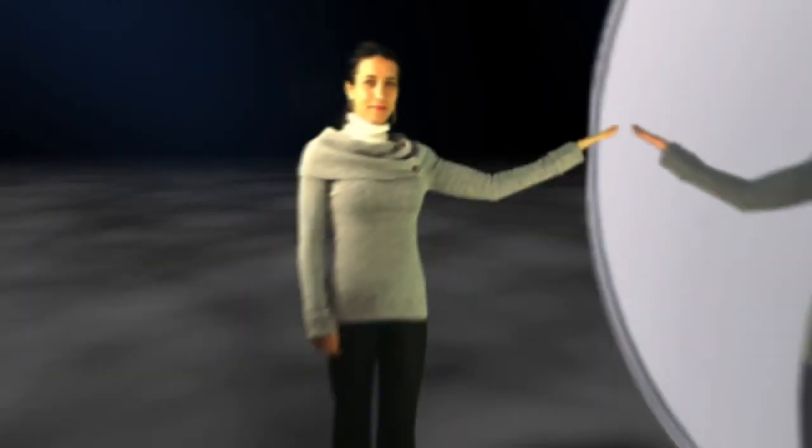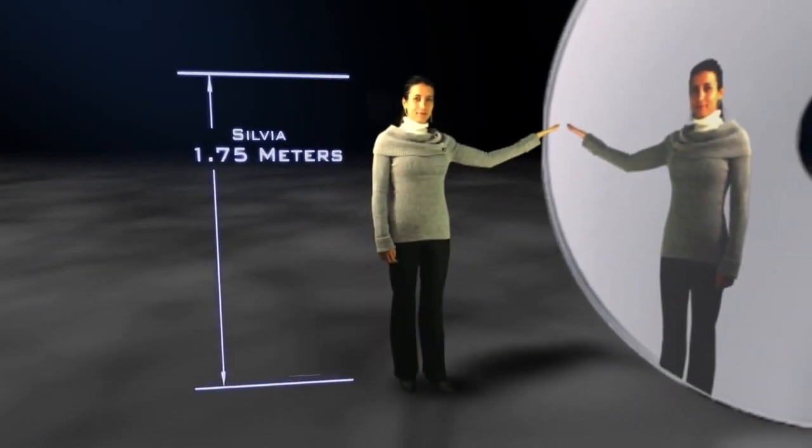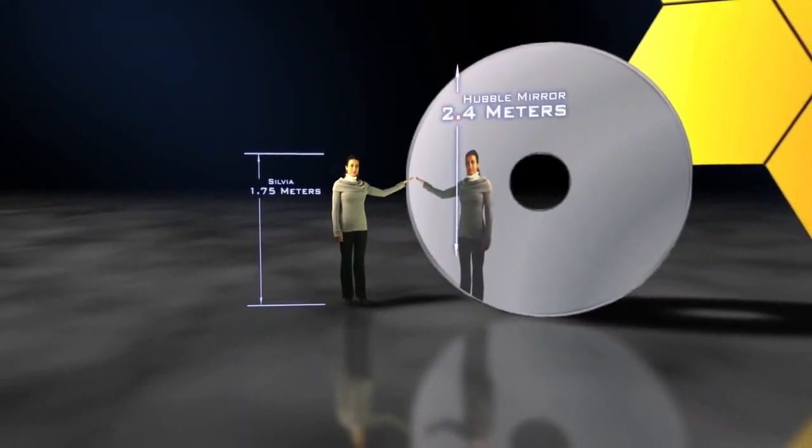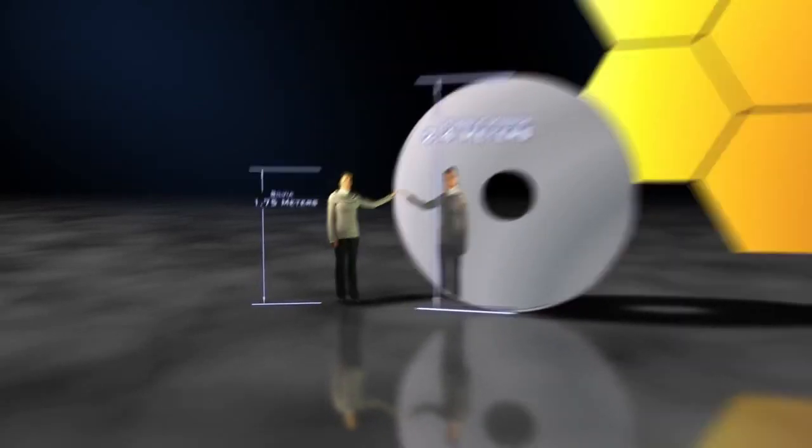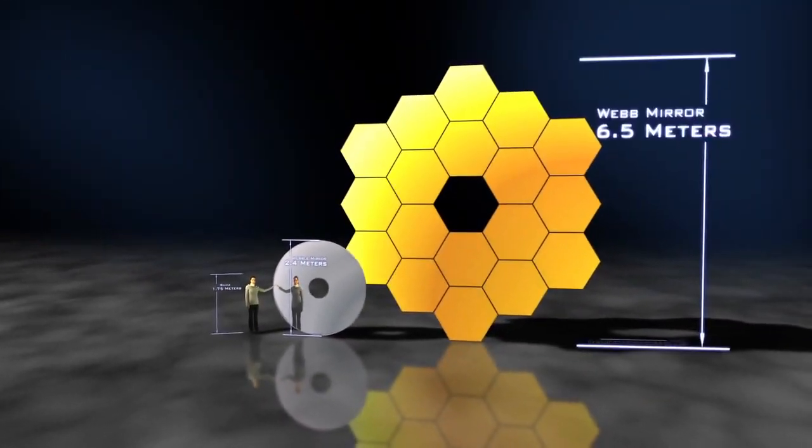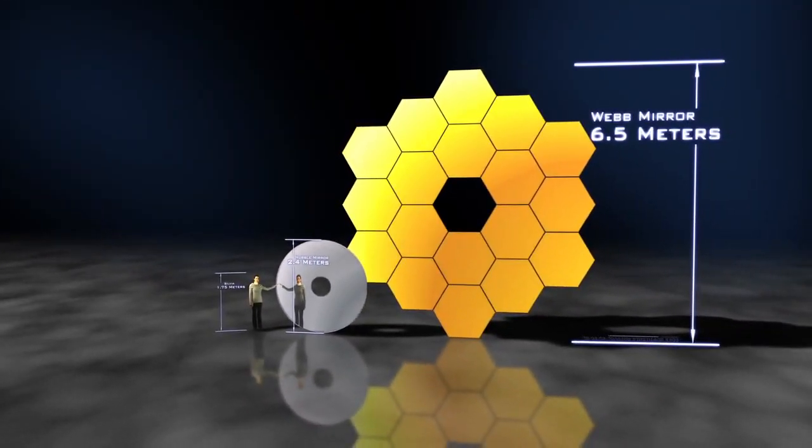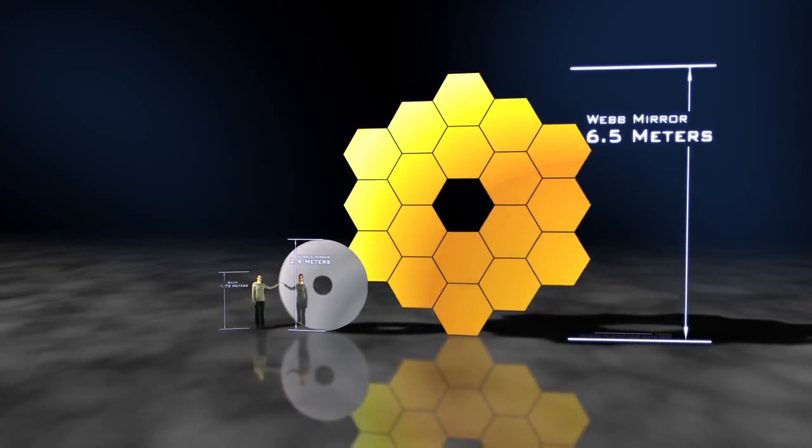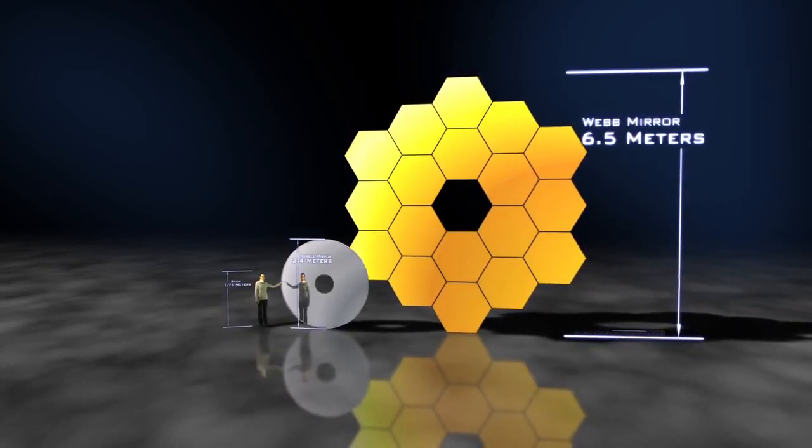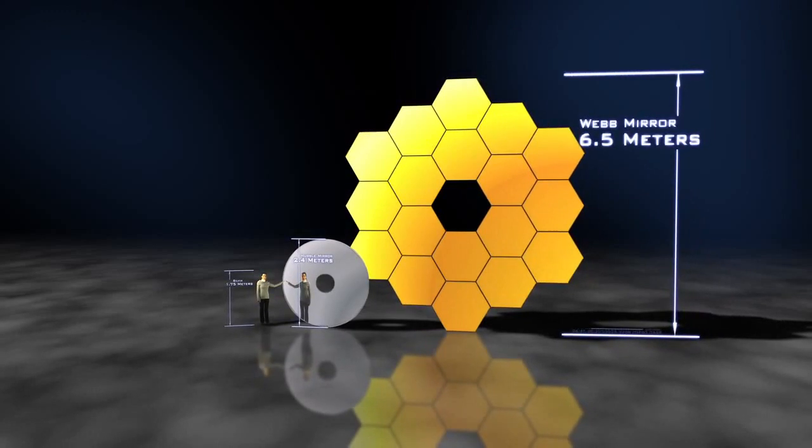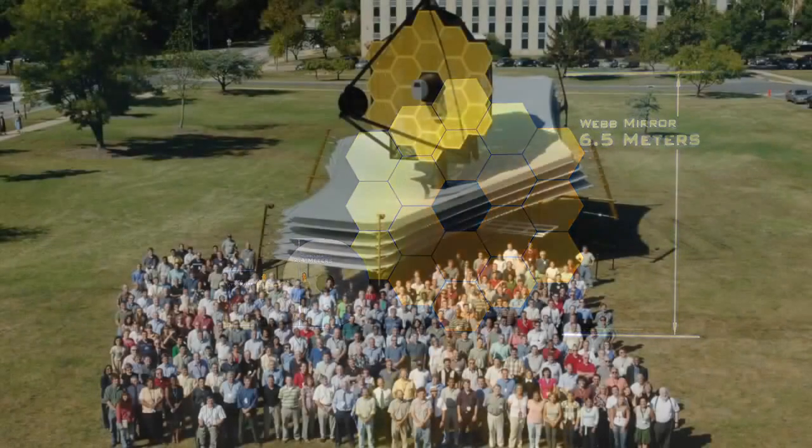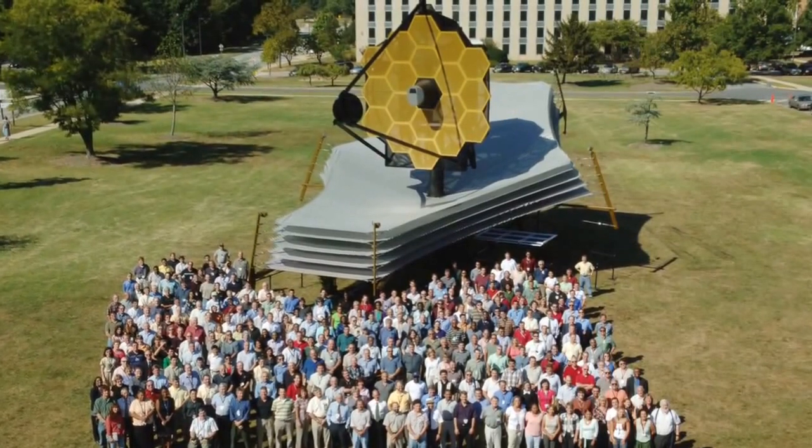Spitzer's mirror is just over two and a half feet across. Hubble's mirror is about eight feet across, so that's a bit taller than a human being. And Webb's mirror uses 18 hexagonal mirror segments to create a reflective surface more than 21 feet across, almost two stories tall. Clearly that's pretty big.